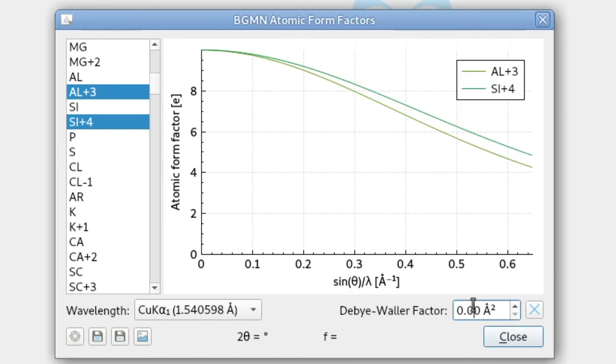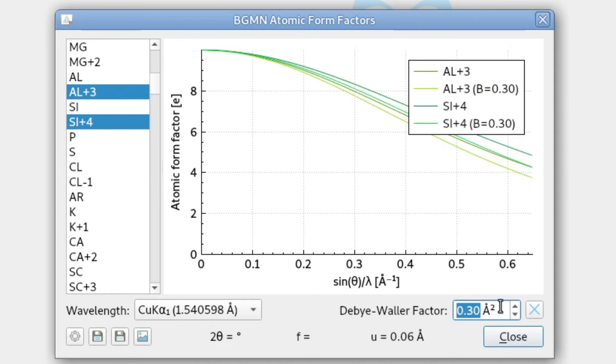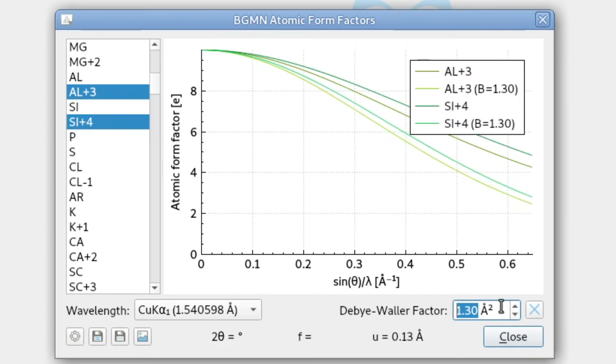There is also a box for the Debye-Waller factor for the thermal vibration of the atoms. And if we enter a positive value, I'm just using the scroll wheel of the mouse to increase this value, we can see that now we get two curves for each selected atom.